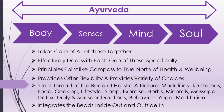Ayurveda actually works like a silent thread. Just as a thread connects all the beads in a flower garland or pearl necklace, Ayurvedic principles serve as the silent thread connecting all holistic and natural modalities. These include doshas, body-mind type, food, cooking, nutrition, lifestyle, sleep, exercise, herbs, minerals, massage, detox, daily and seasonal routines, behaviors, yoga, and meditation. This is not an exhaustive list, but whatever you find in holistic and natural modalities, you can integrate it easily with Ayurvedic principles.